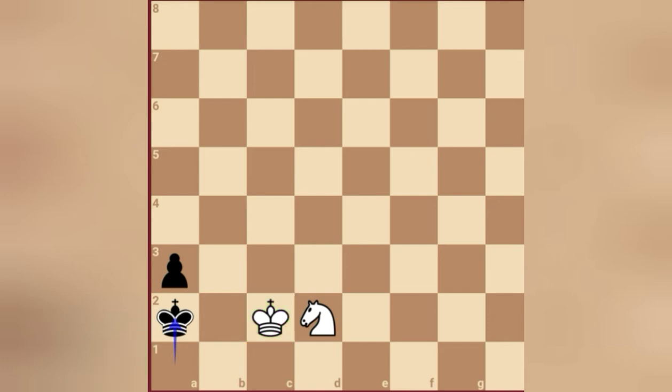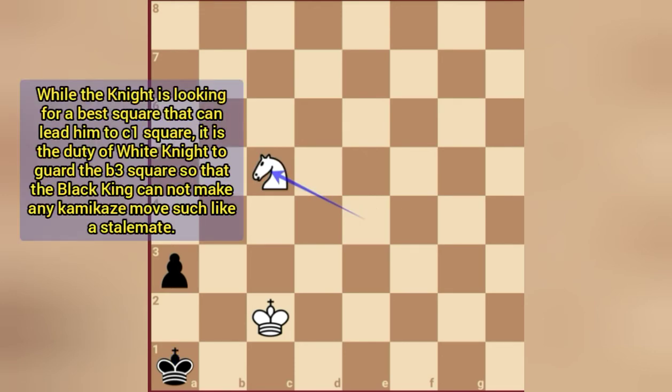After our white king reaches c2, it is now the time to maneuver our knight from d2 to c1. We will start with knight a4, and then there's no other possible move of black, so we will play king a1. Then we'll play knight c5.